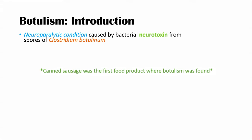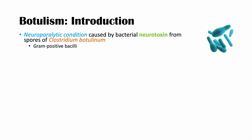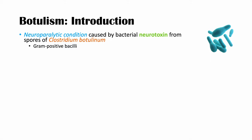Botulism is a neuroparalytic condition caused by bacterial neurotoxin from spores of Clostridium botulinum. Clostridium botulinum is a gram-positive bacilli — if we were to put it under a microscope and do a gram stain, it would come out purple. It's rod-shaped, so it is a bacillus type of bacteria. The key to Clostridium botulinum is that it is an obligate anaerobe — it requires no oxygen to grow. If there's any oxygen present, it can become stressed and produce spores.